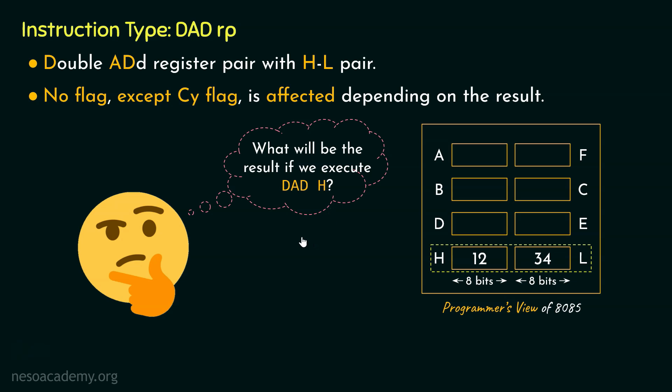Feel free to write down your answers within the comment section. So that is all about the DAD register pair. Do remember, here the mnemonic DADH stands for Double ADD Register Pair with HL register pair. So it's pretty evident from this that one of the 16-bit operand has to be within the HL register pair. Additionally, the instructions of this particular type fall under the category of one-byte long instructions.